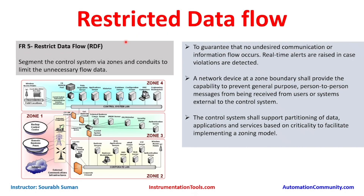This topic is about restricted data flow and data flow control technologies. The requirement is to segment the control system via zones and conduits to limit unnecessary data flow. In the Purdue model, we studied how to segregate control system architecture into zones. Conduits are the links between levels — it could be a firewall, switch, or router. All such communication channels are called conduits.